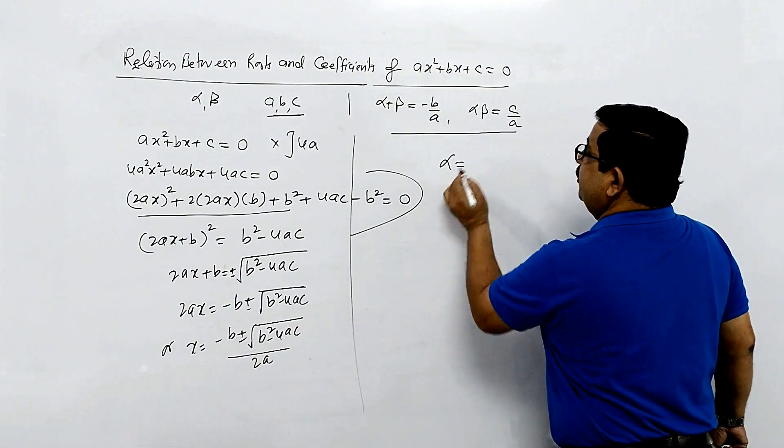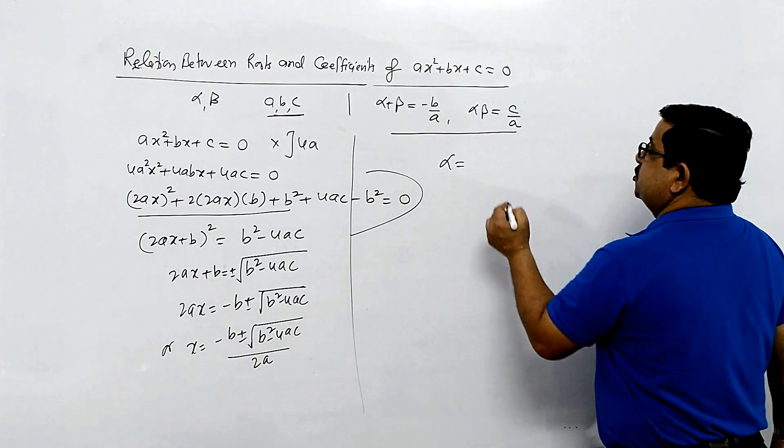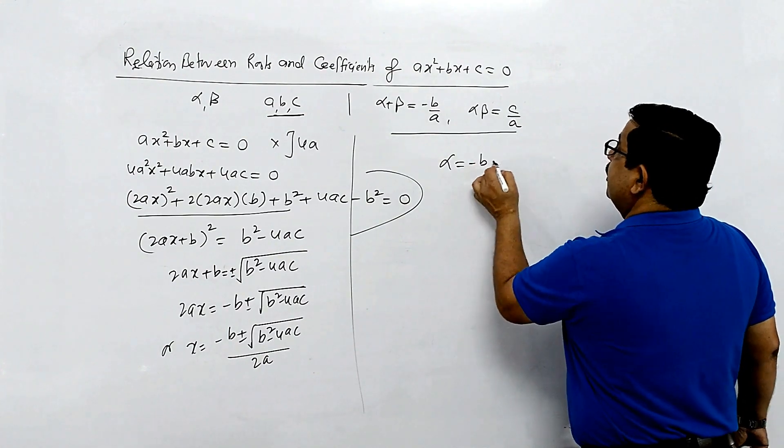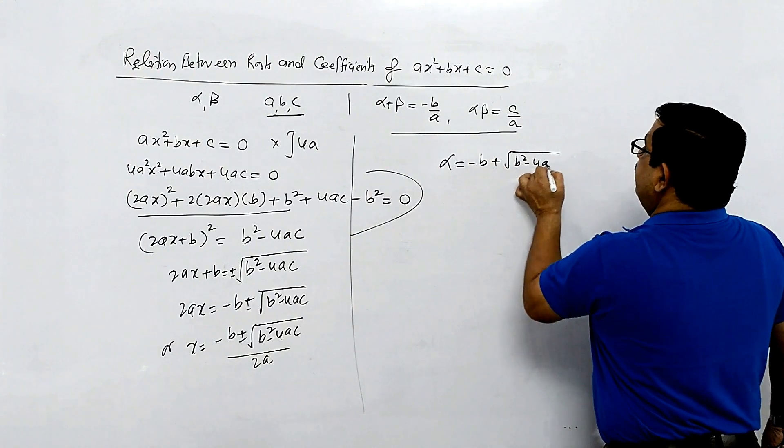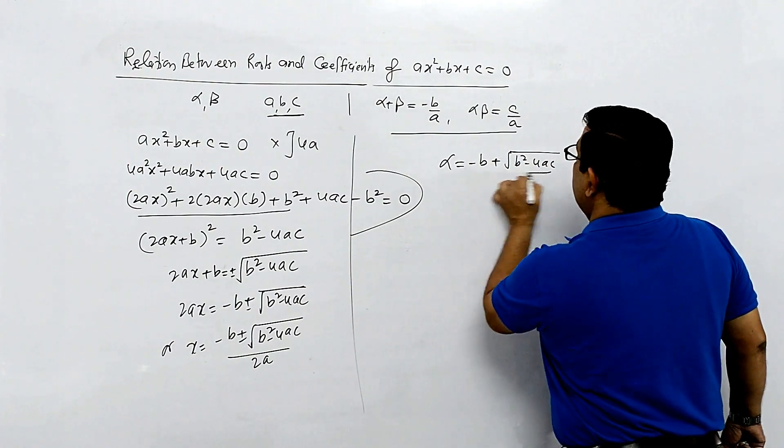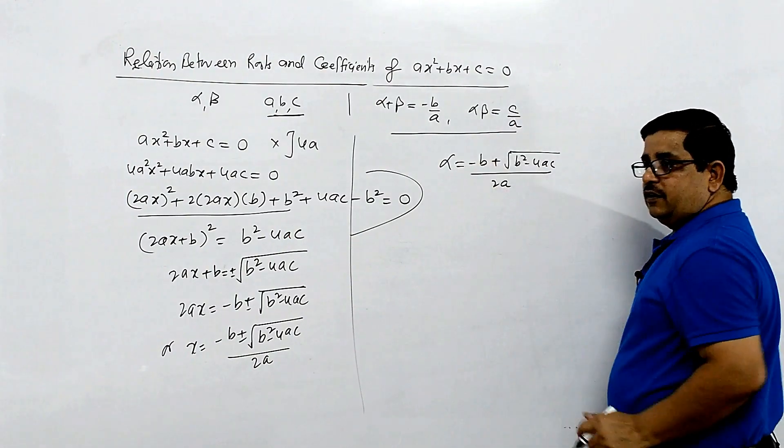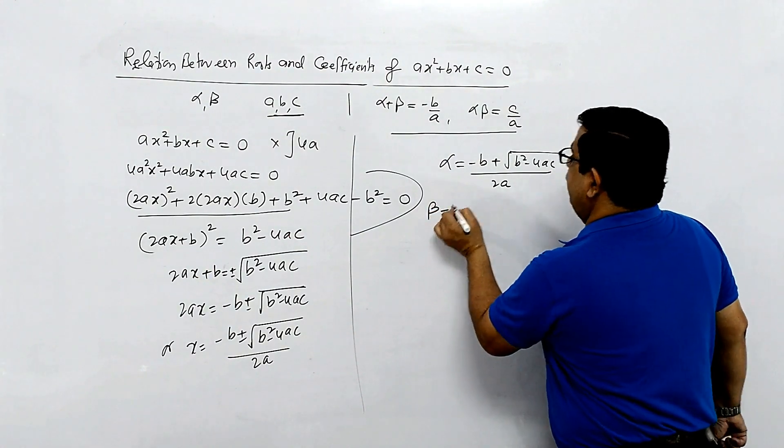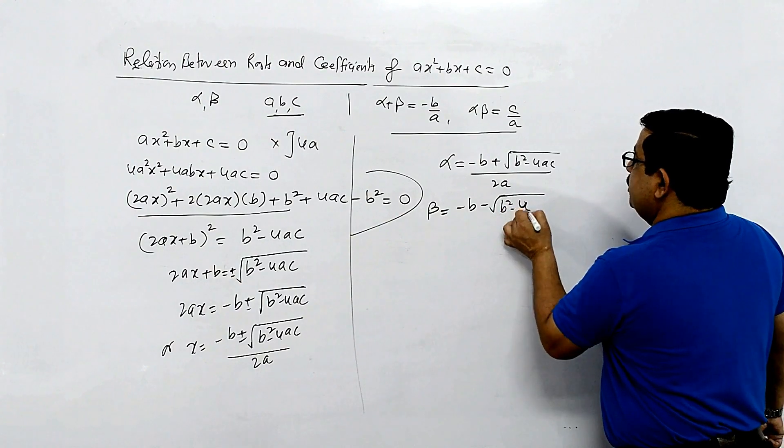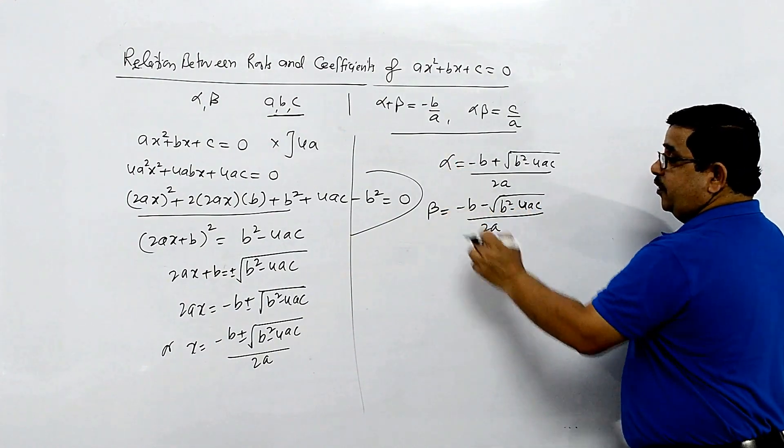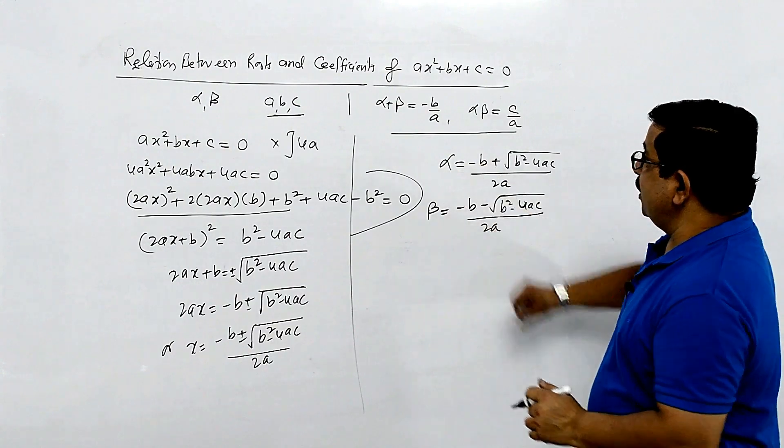By taking the positive sign, alpha equals minus b plus square root of b square minus 4ac divided by 2a. And beta equals minus b minus square root of b square minus 4ac divided by 2a.